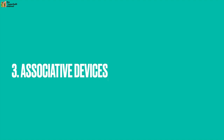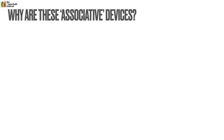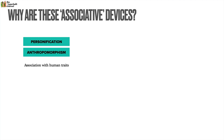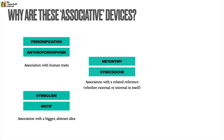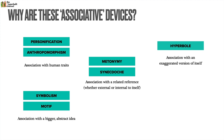Now let's move on to the associative devices. Personification and anthropomorphism are both devices that associate a reference with human traits. Symbolism and motif deal with references associated with a bigger abstract idea. Metonymy and synecdoche involve references associated with a related reference, whether external or internal to itself. Hyperbole is about a reference associated with an exaggerated version of itself. And with allusion, references are associated with another more famous reference. If you look at the core nature of all these devices, you'll notice they're all associative in some way.